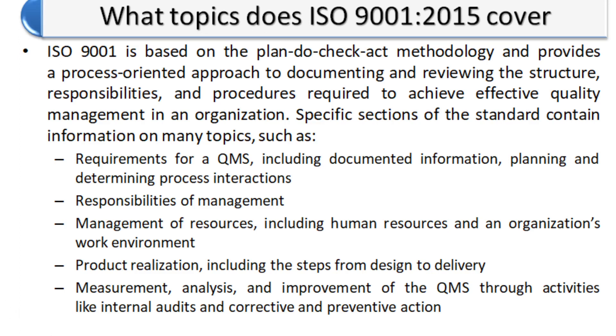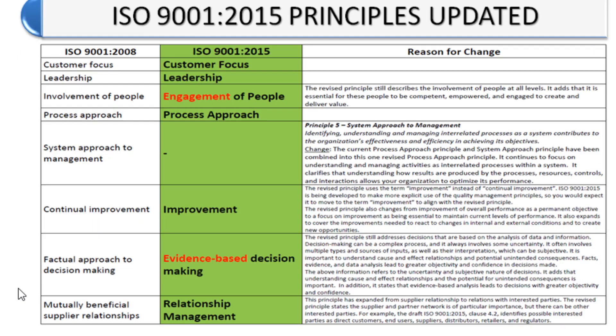Next we look at the updated revision of ISO 9001-2015. Previously, ISO 9001-2008 existed and it was updated to ISO 9001-2015 in September 2015. There are seven updated principles in ISO 9001-2015. In the 2008 version, customer focus remained the same and leadership remained the same, but 'involvement of the people' was changed to 'engagement of the people'.